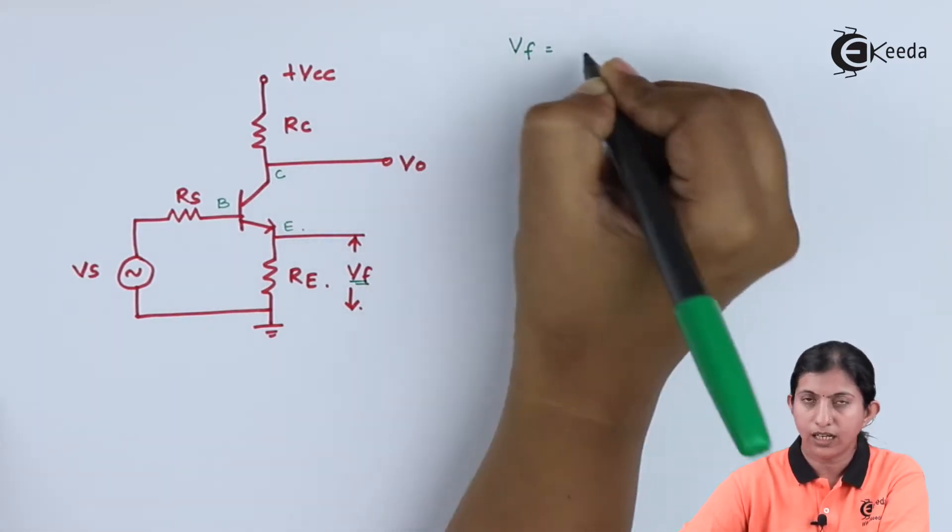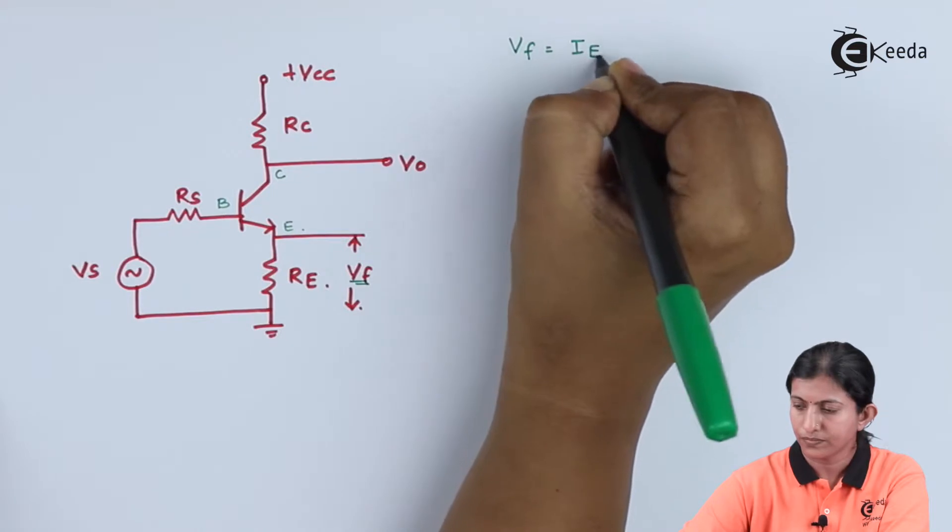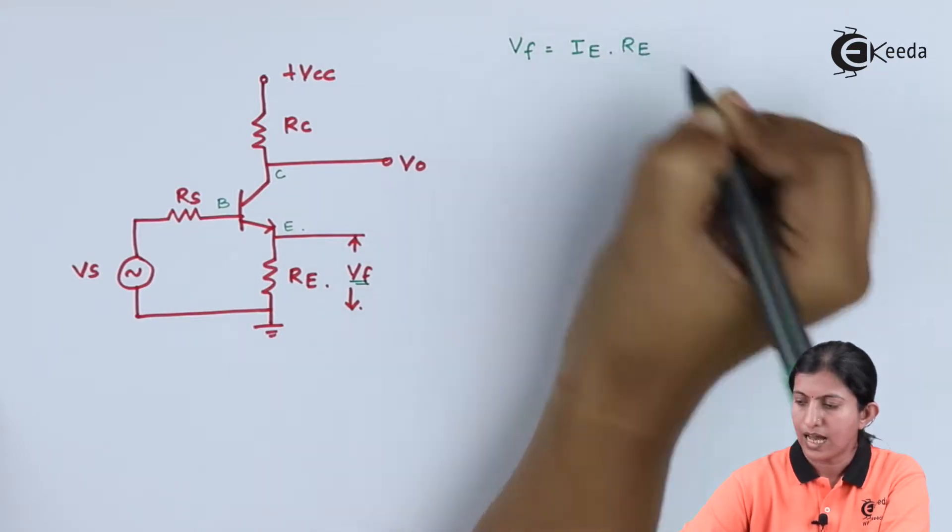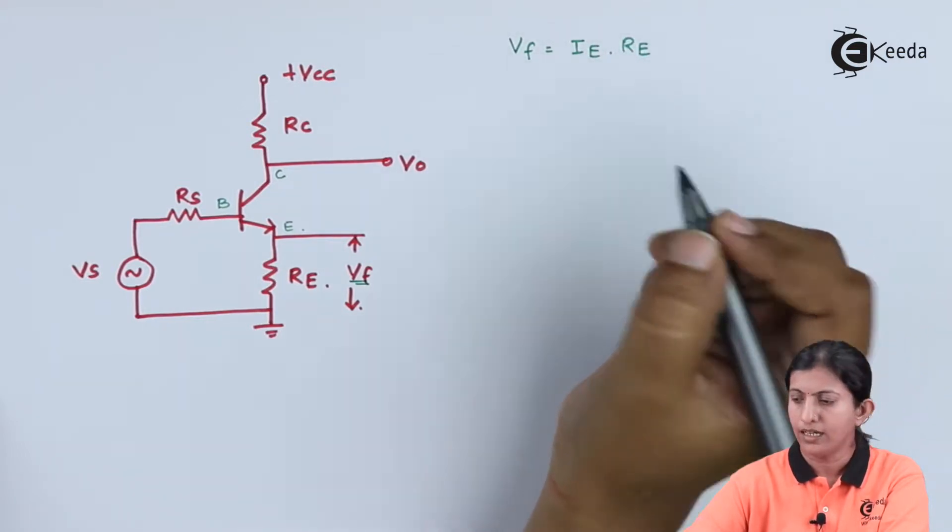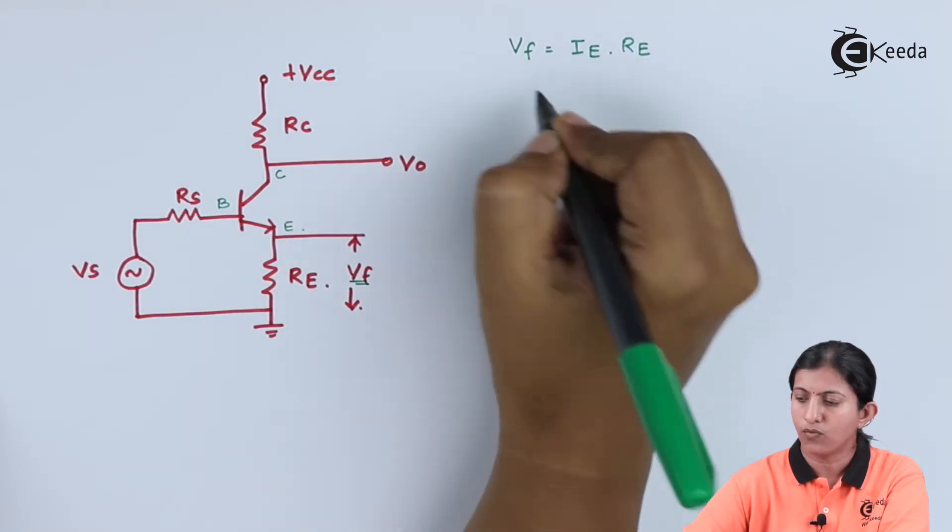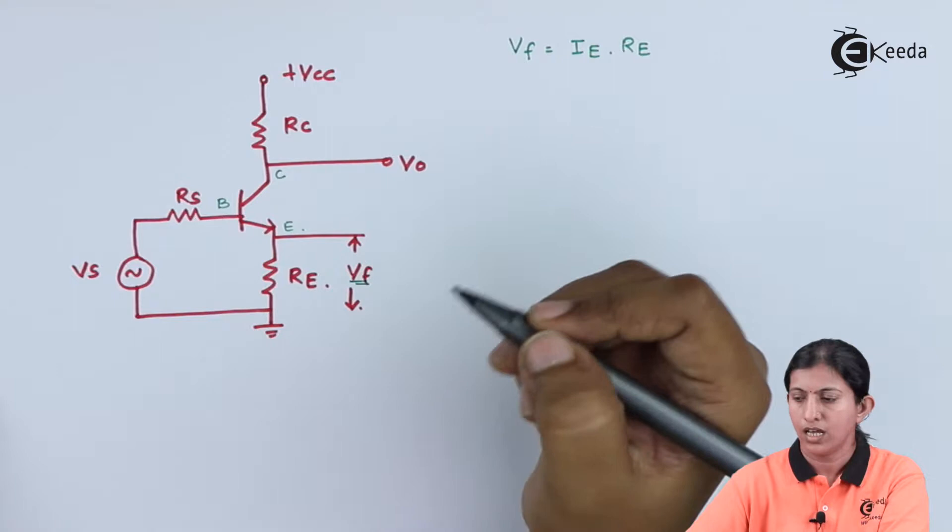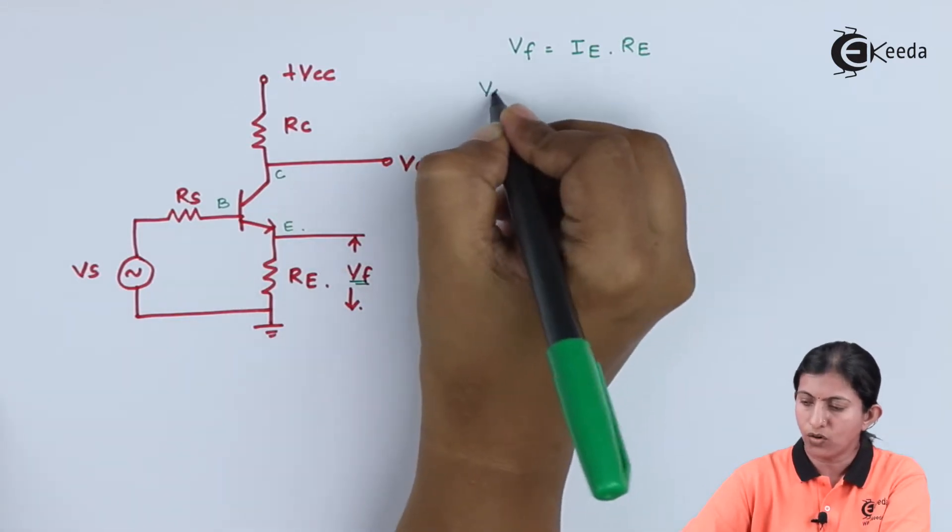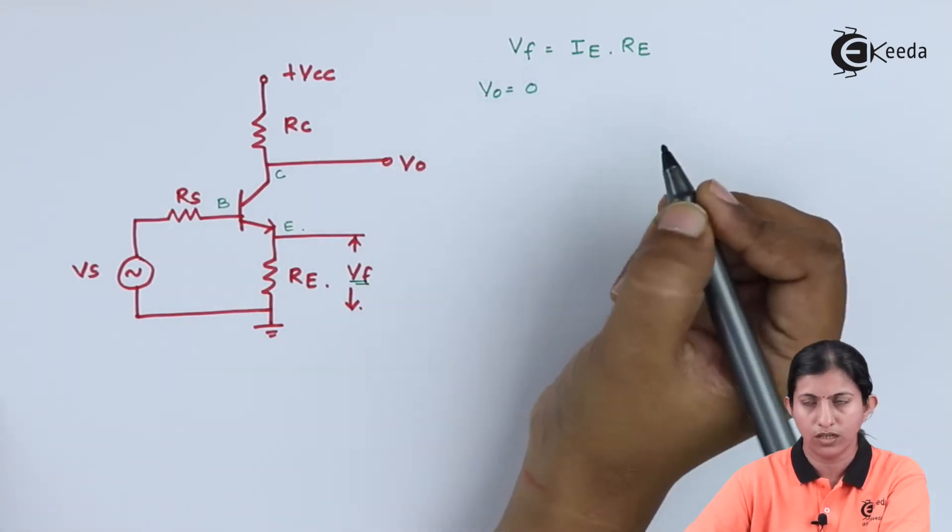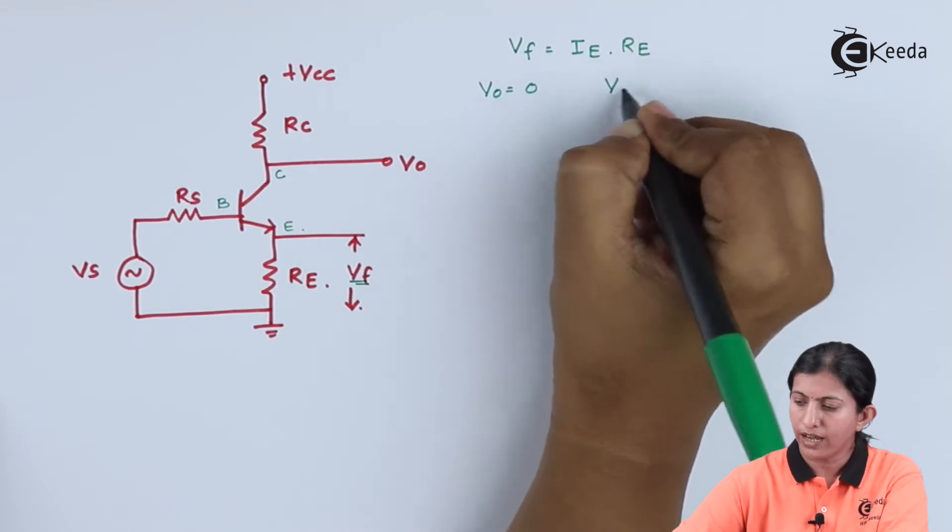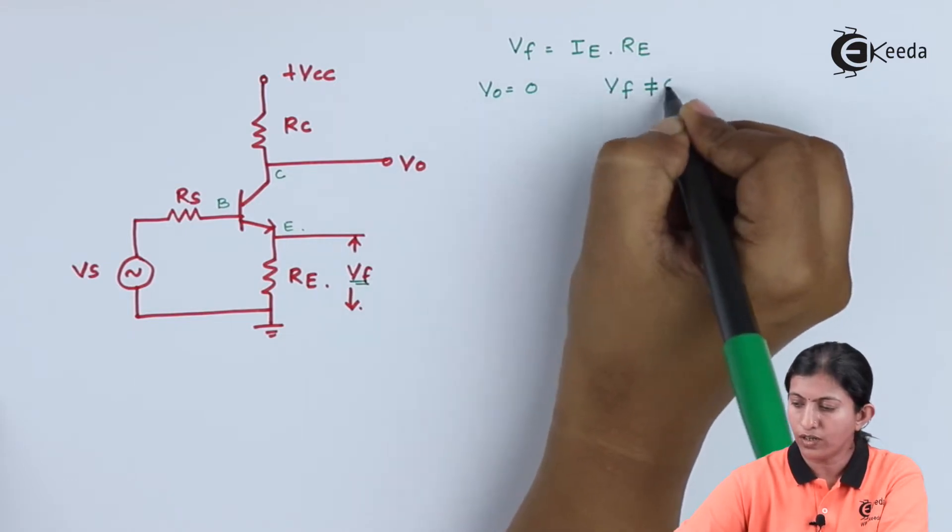So, Vf is equal to Ie into Re, that is the feedback voltage is the voltage drop across the emitter resistor. Now, if we consider Vo is zero, then Vf is not equal to zero.